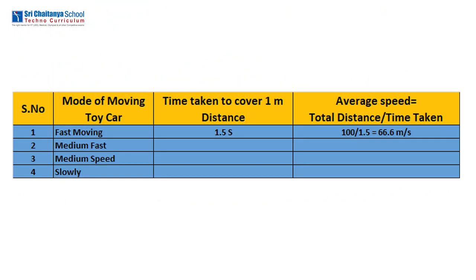Tabulate this value of time and calculate the speed of the toy car using the formula: average speed is equal to total distance divided by total time taken. For this case, time taken is 1.5 seconds. Speed is equal to 100 divided by 1.5, which is equal to 66.6 centimetres per second.